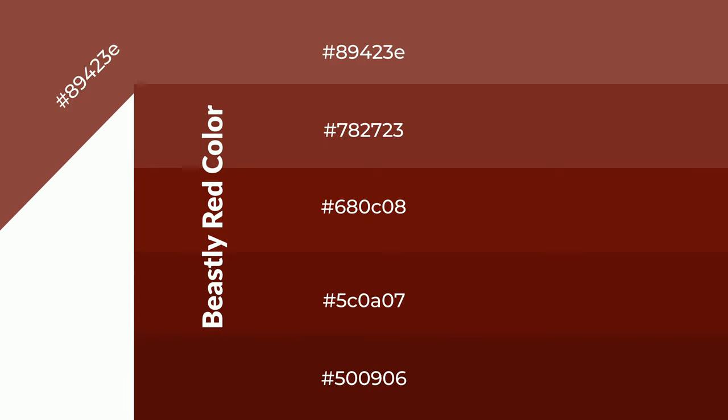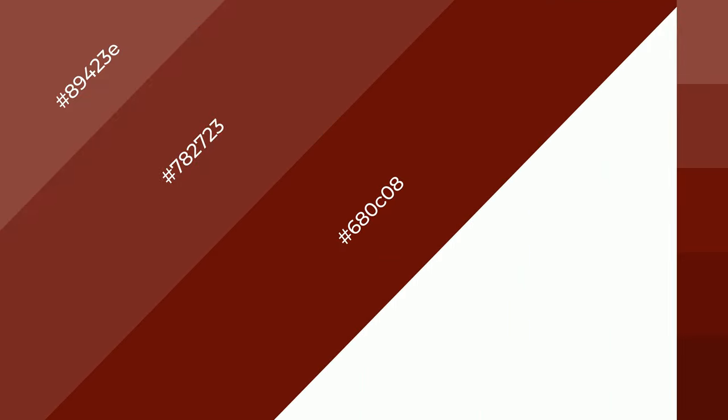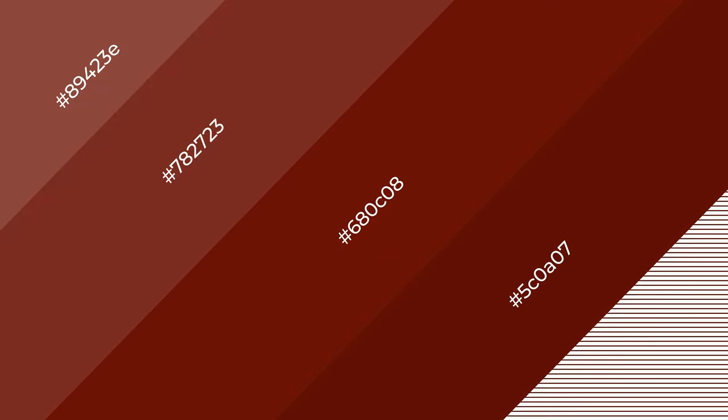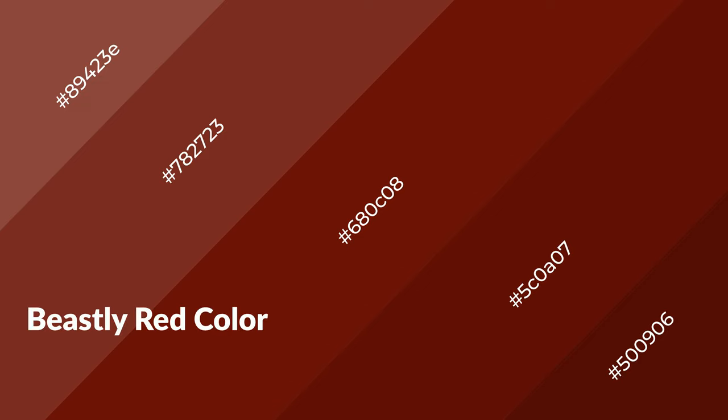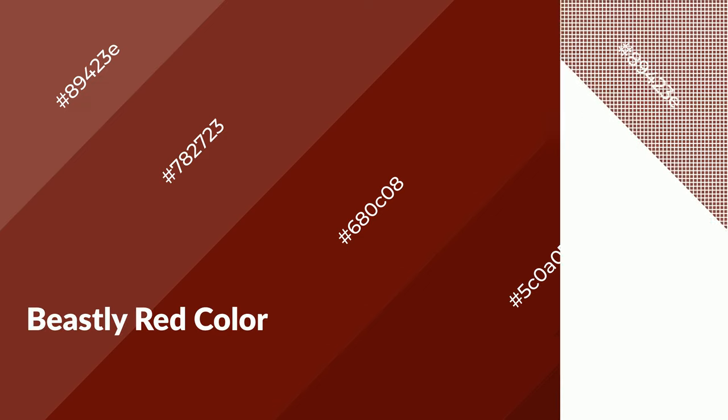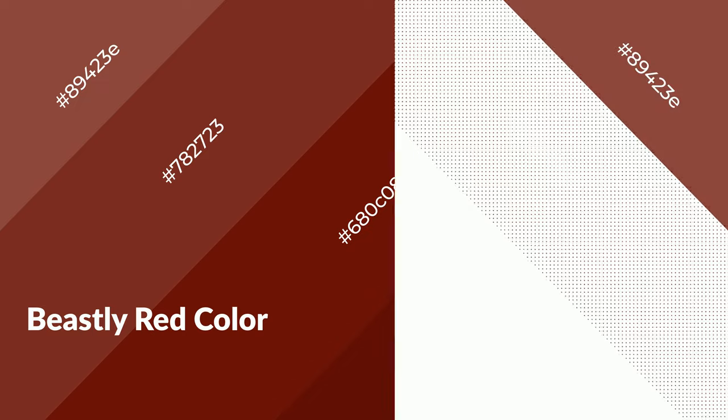To generate shades of a color, we add black to the color, and it is used in patterns, 3D effects, and layers. Shades create depth and drama. Beastly red is a warm color and it emits cozier and active emotions. Warm colors are symbols of warmth, fire, heat, and sunshine.